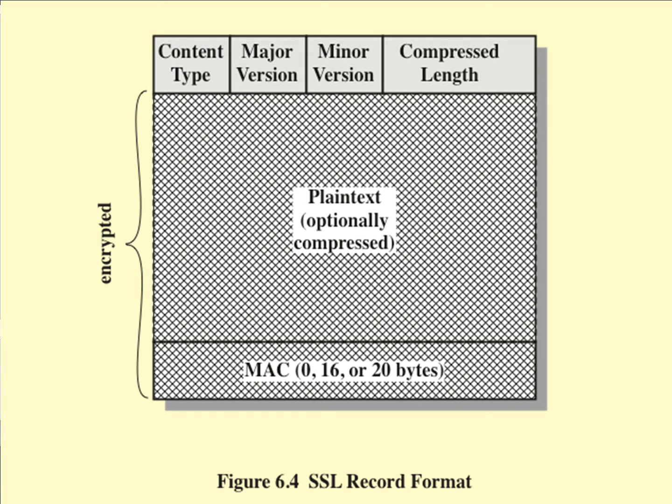Here is the SSL record header. At the top we have content type, major version, minor version, and the compressed length, followed by the plain text. The content type is the higher layer protocol used to process the enclosed fragment. The major version in SSL is currently version 3. The minor version, if we're using SSL version 3, is 0. The compressed length is the length in bytes of the plain text fragment below, and the maximum value is 2^14 plus 2,048.